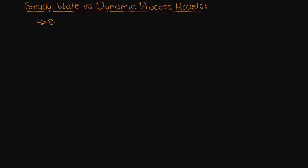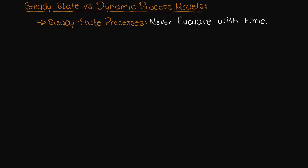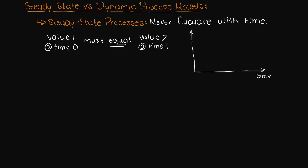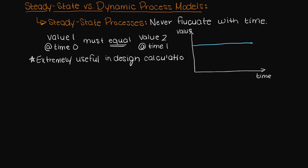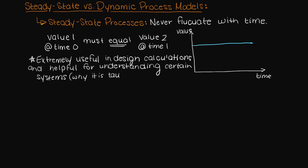Let's first talk about our favorite thing in the world: steady state processes. These do not fluctuate at all with time, such that if you measured something now versus 10 minutes from now it will be just the same. These can be extremely useful in design calculations.